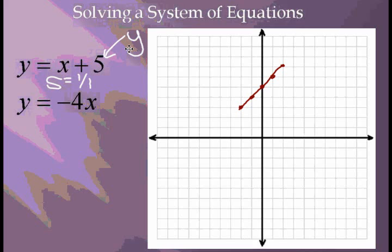The next equation is y equals negative 4x. Since there is no number after the negative 4x, the y-intercept is 0. Plot the point at 0, 0.